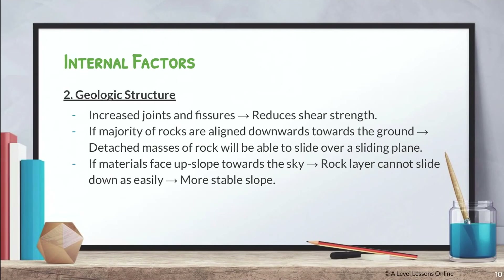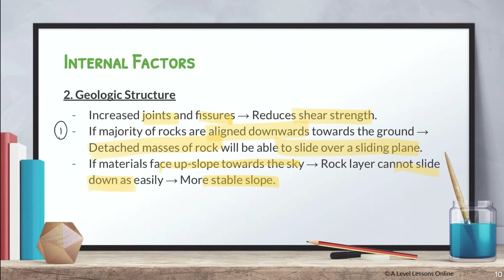The next internal factor is geologic structure — specifically joints and fissures. A large number of joints and fissures reduces shear strength. If the majority of rocks are aligned downwards toward the ground, detached masses of rock can slide over a sliding plane. On the other hand, if rock layers face upslope toward the sky, the rock layer cannot slide down as easily, leading to a more stable slope.